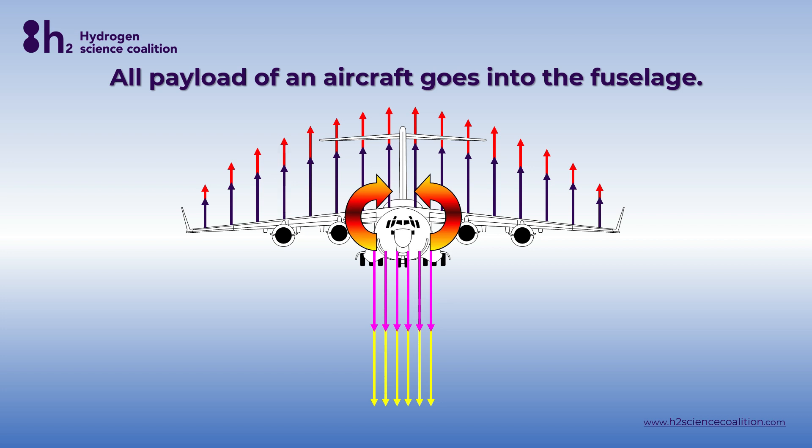At a certain moment, these bending forces are at their maximum value for safe flight, and hence you have arrived at the maximum zero fuel mass. Above this mass, you are not allowed to take any payload onboard an aircraft anymore. But as the name maximum zero fuel mass implies, you are still allowed to take fuel. Why is this?